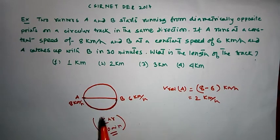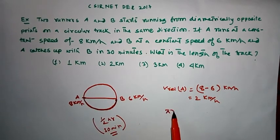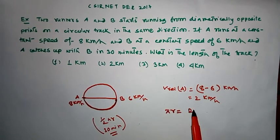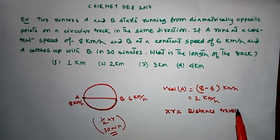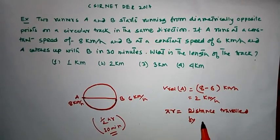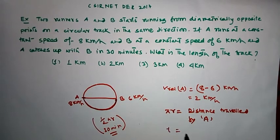That is half of the circumference of the circular track, which is πr. This is the distance traveled by A, and the time is 30 minutes.